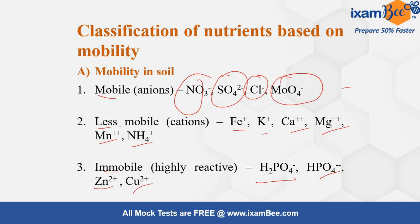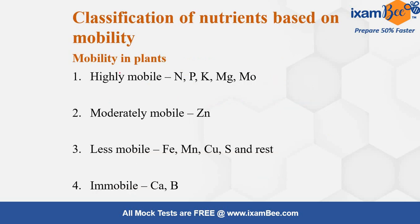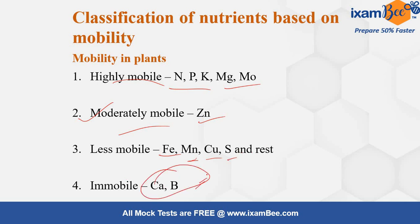In plants, the highly mobile elements are N, P, K, Mg, and Mo. The moderately mobile element is Zinc — which was the answer to our first question. The less mobile elements are Iron, Manganese, Copper, and Sulfur. The immobile elements in plants are Calcium and Boron. Remember the immobile and highly mobile elements, and you can automatically identify the less mobile ones.